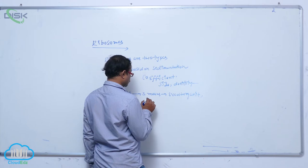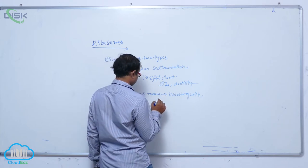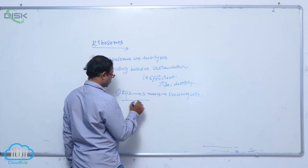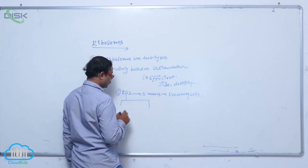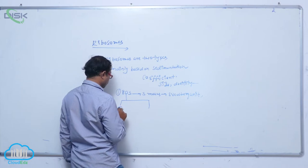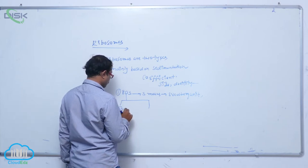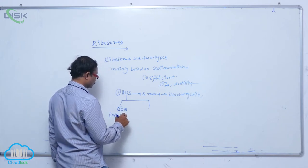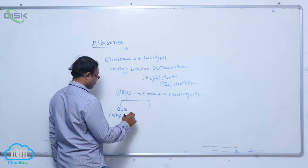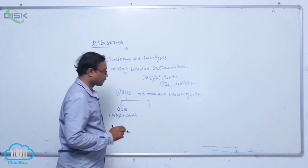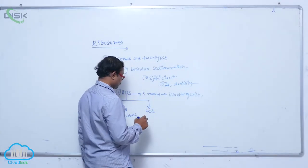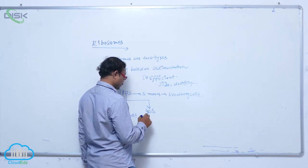80S ribosomes are divided into two subunits. The large subunit is known as 60S and the small subunit is known as 40S.